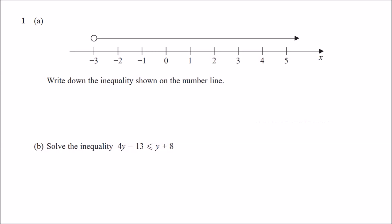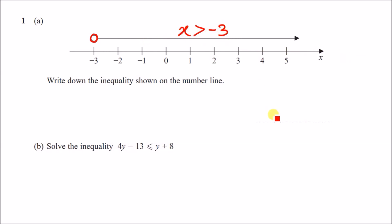Let's begin this walkthrough. Number one, part a: write down the inequality shown on the number line. The best way is to always write x first. The ball is at minus three and it's not shaded in, so we don't include it. We can see the line covers all numbers bigger than minus three, so the values x could take would be bigger than minus three.